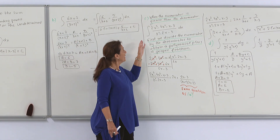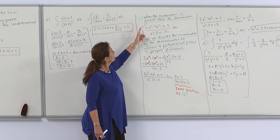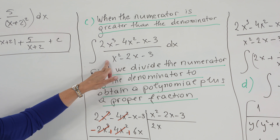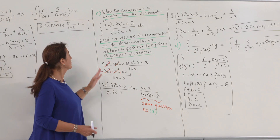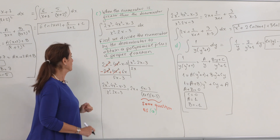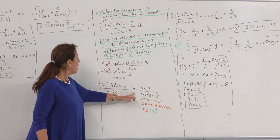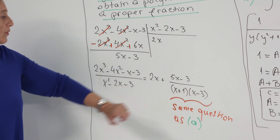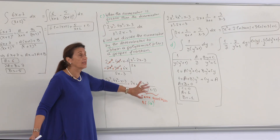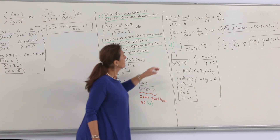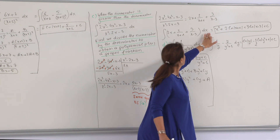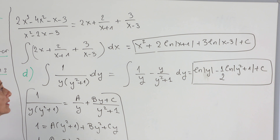Now we have a different example — similar to example a, but the power of the numerator is greater than the power of the denominator. We should divide first: divide the numerator by the denominator to obtain a polynomial plus a proper fraction. After division I obtain 2x plus (5x minus 3) over (x plus 1)(x minus 3). The fractional part was handled in example a. Writing the full integral gives x² plus 2 ln|x plus 1| plus 3 ln|x minus 3| plus C.